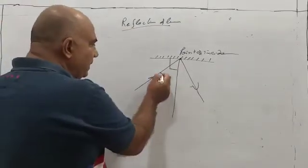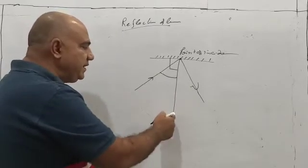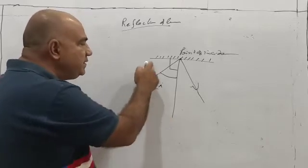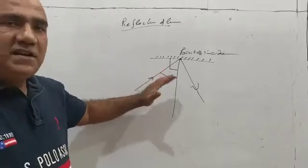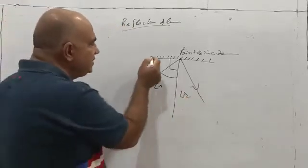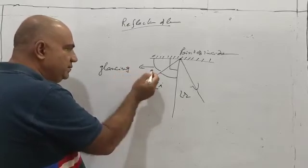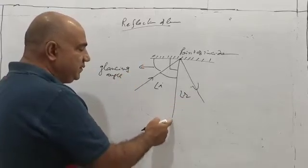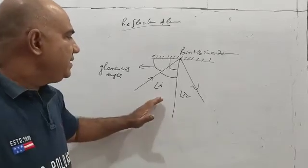Now we will see what these angles are. The angle of incidence is the angle between the normal and the incident ray. Please remember — it is not the angle between the incident ray and the reflecting surface. Similarly, the angle of reflection is the angle between the normal and the reflected ray. The angle between the incident ray and the reflecting surface has a particular name — it is called the glancing angle. Very few books refer to this, but it is called the glancing angle.